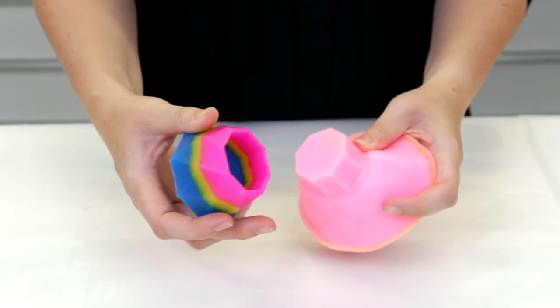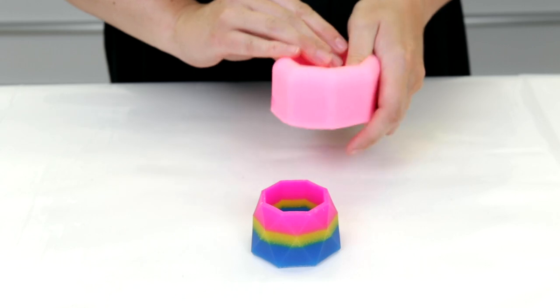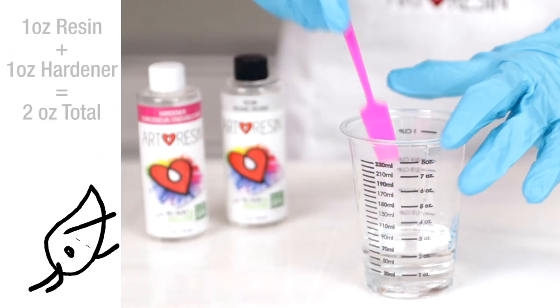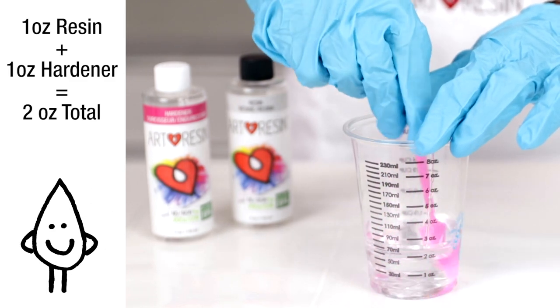Here's a quick look at some of the techniques you can use to make your own trinket dish. First, with your gloves on, mix up a batch of Art Resin according to the instructions. The mold will hold two ounces total, so one ounce resin, one ounce hardener.